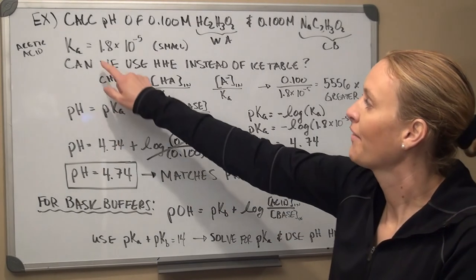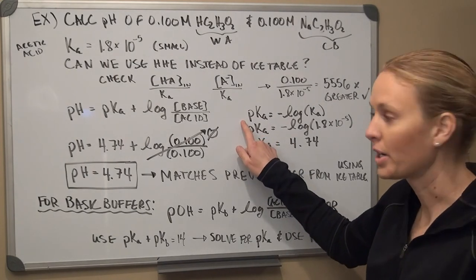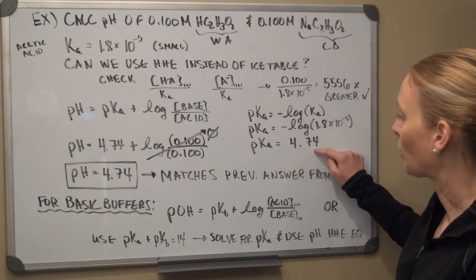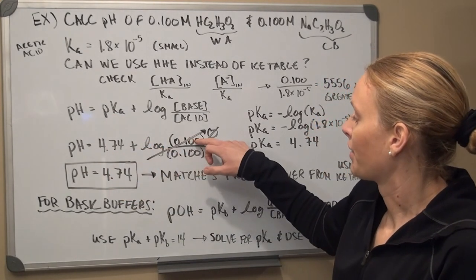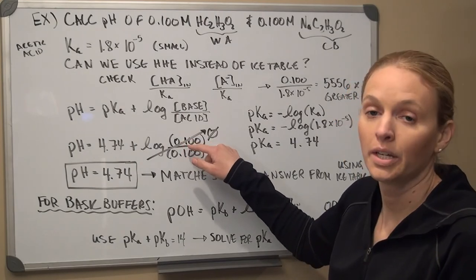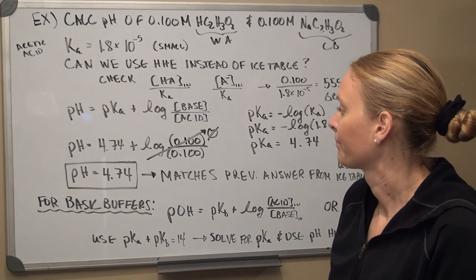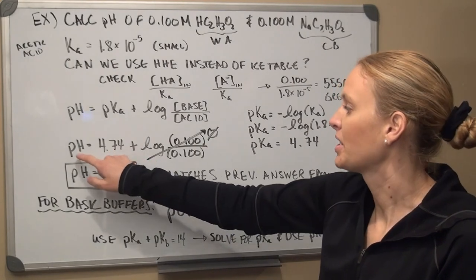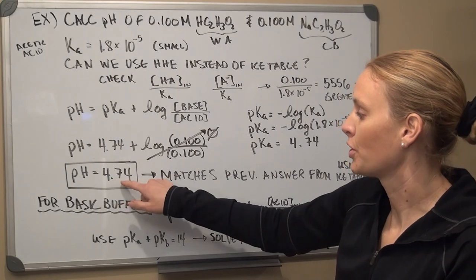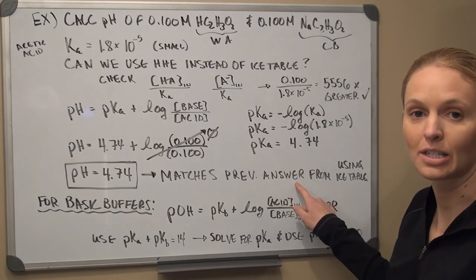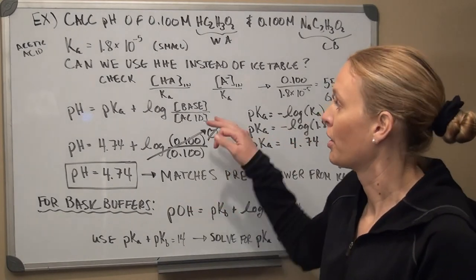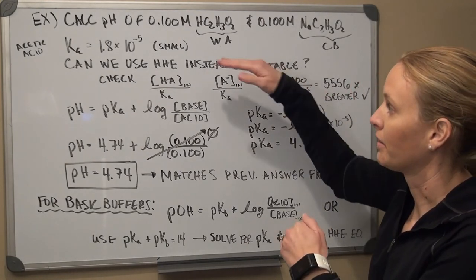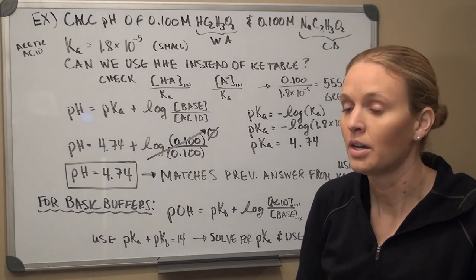We also need the pKa. Using pKa = −log(Ka), I plug in 1.8 × 10⁻⁵ and calculate pKa = 4.74. Plugging that in and taking log of the base over acid — which is log(0.1/0.1) = log(1) = 0 — the entire log term goes to zero, so the pH equals the pKa: 4.74. This confirms we get the same answer as the ice table.